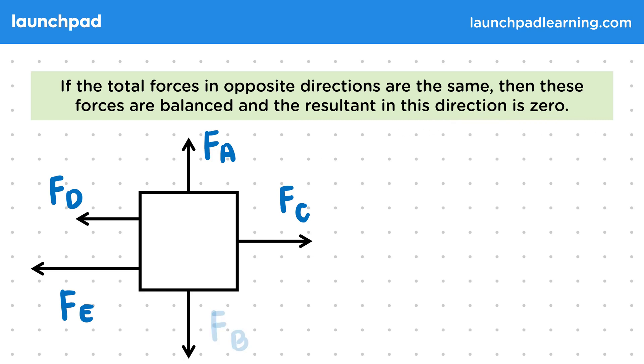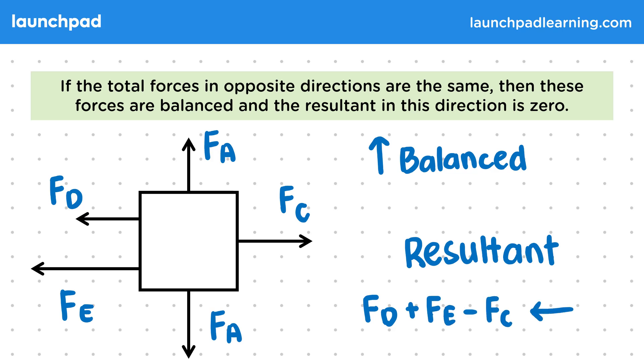For example, if the bottom force has the same magnitude as the top force, the forces are balanced as they are equal and opposite. The resultant force is therefore to the left, as there's no vertical component.